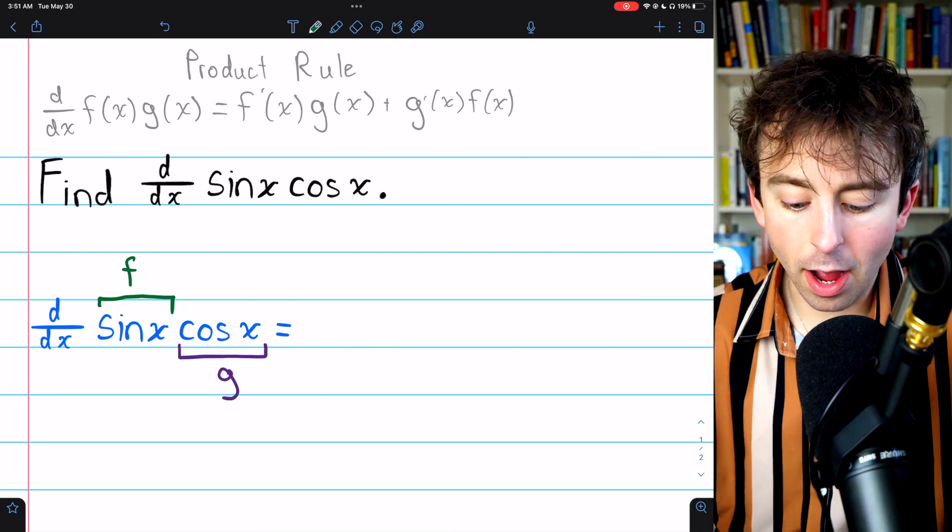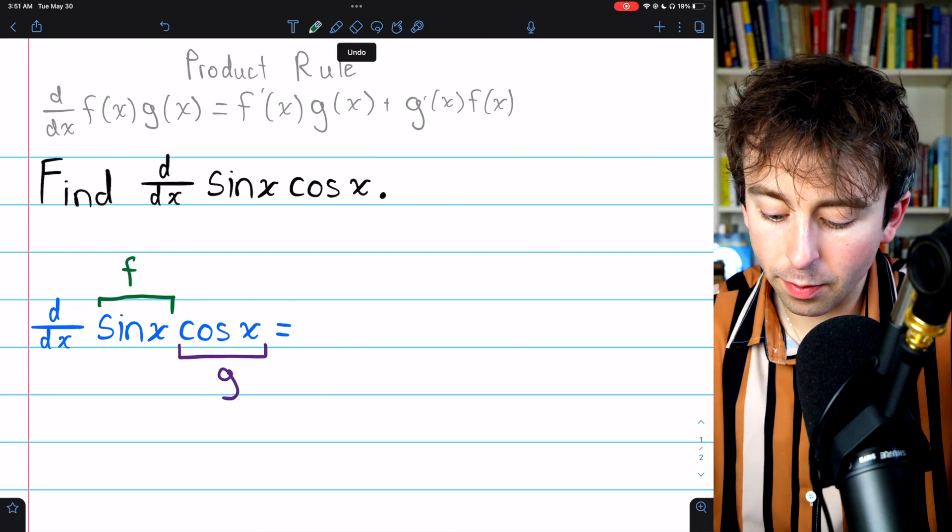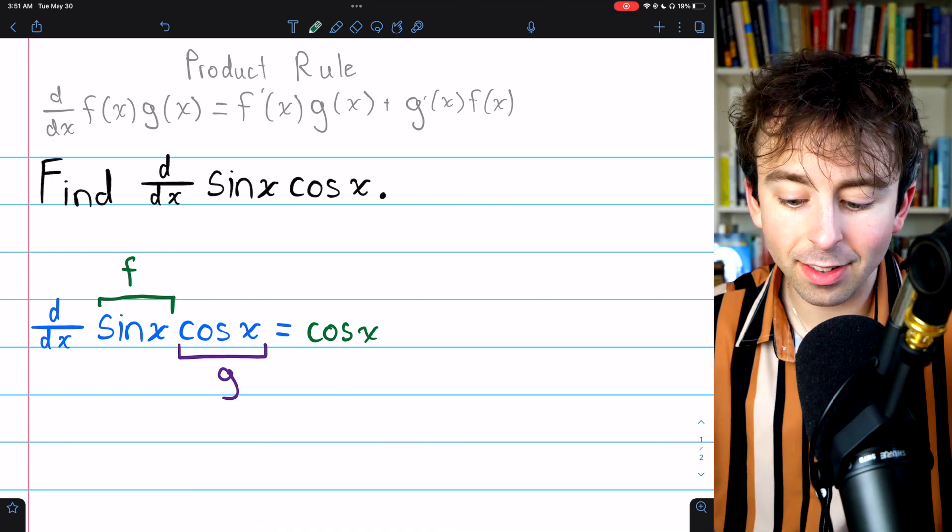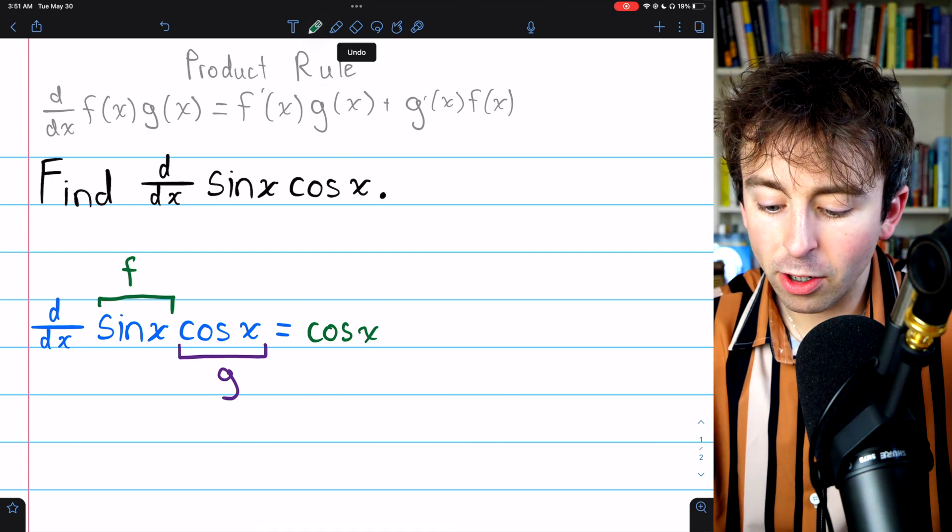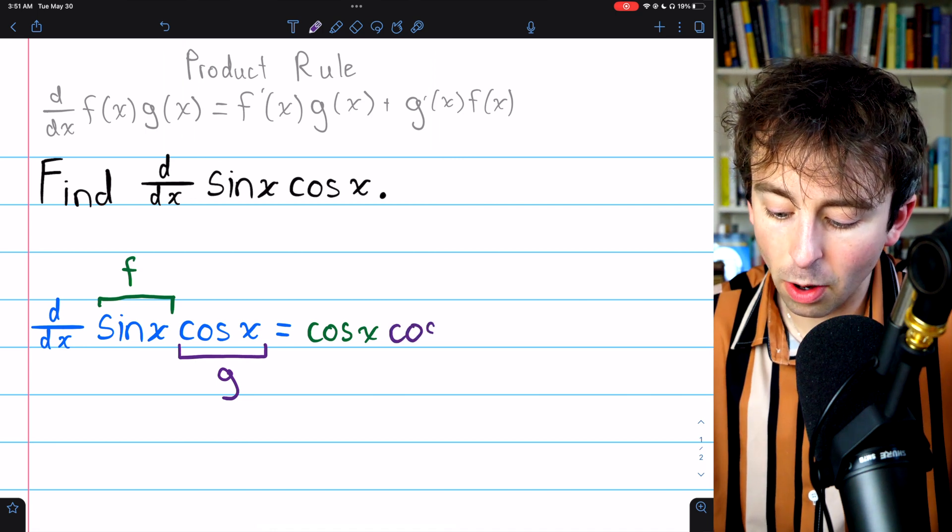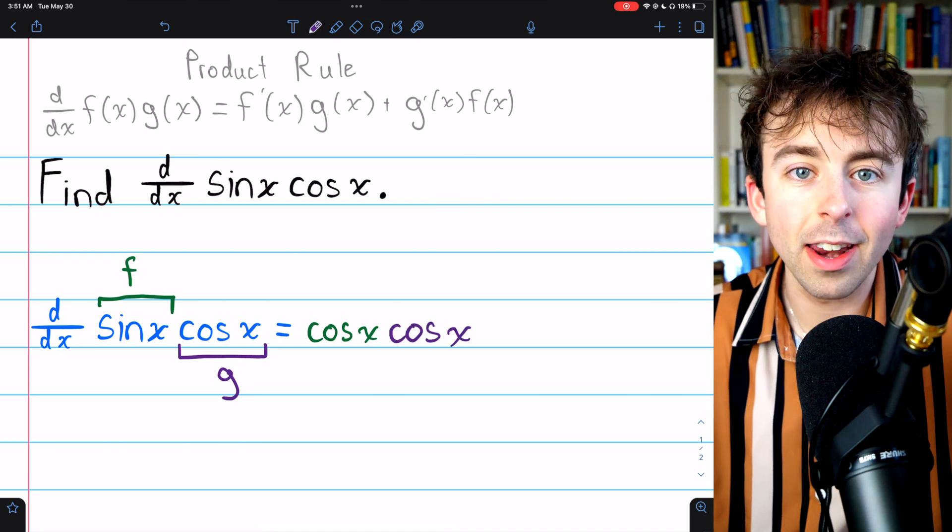Then what is f prime? Well, f prime is the derivative of sine, which is cosine, and don't forget it's cosine of x. We then need to multiply that by g of x. g of x in this case is cosine, so it's cosine of x times cosine of x.